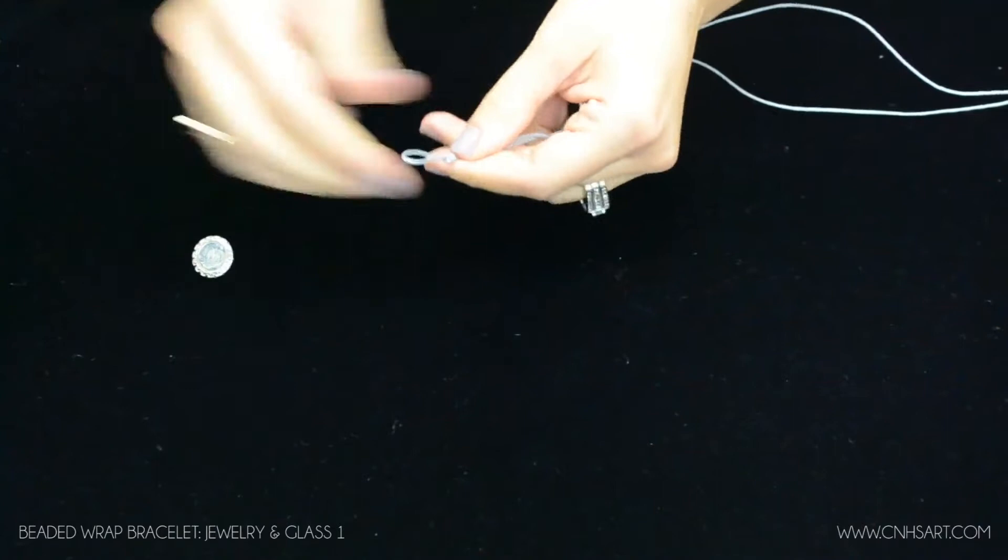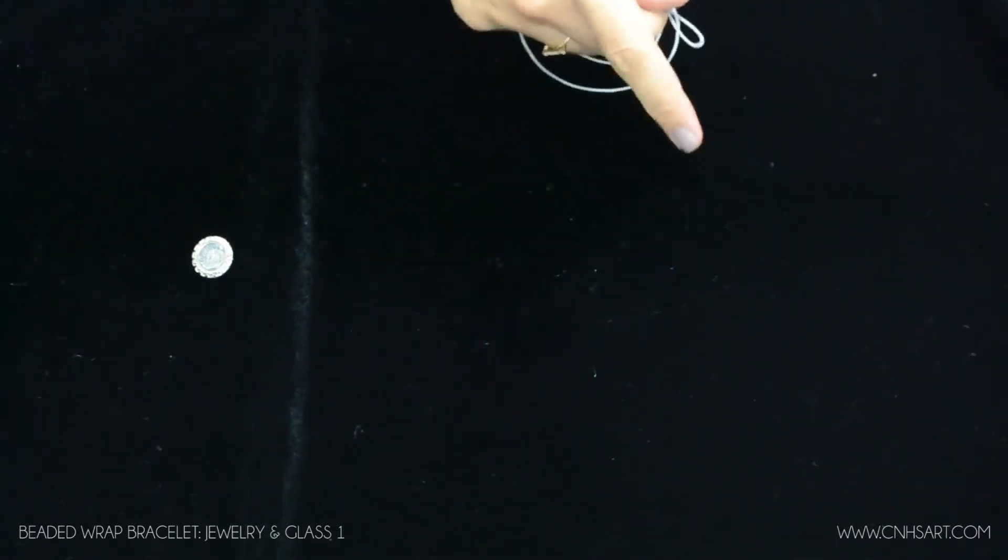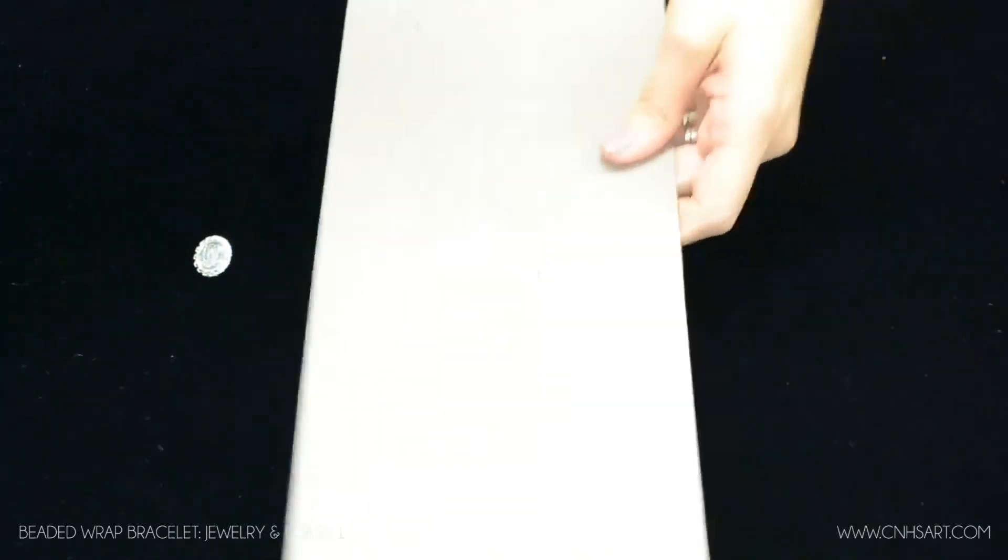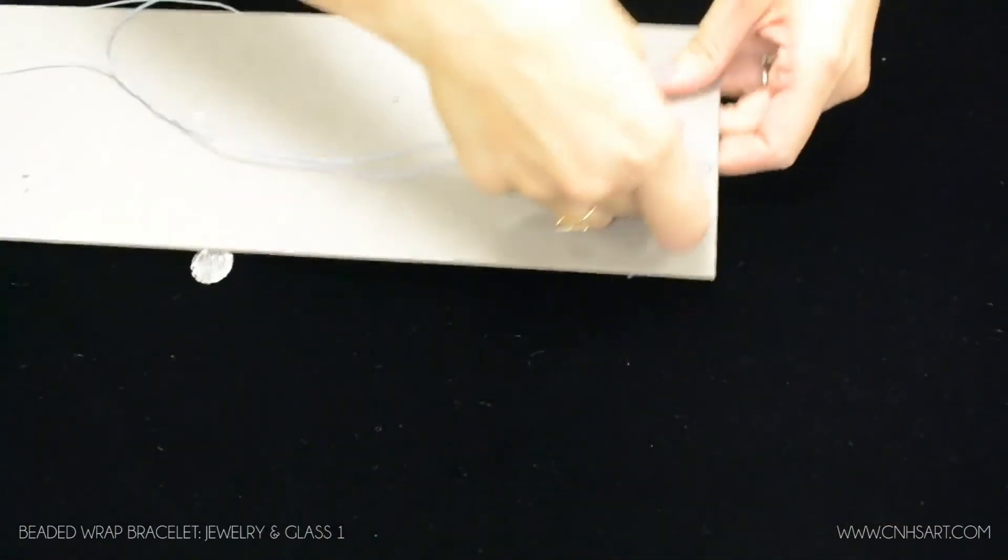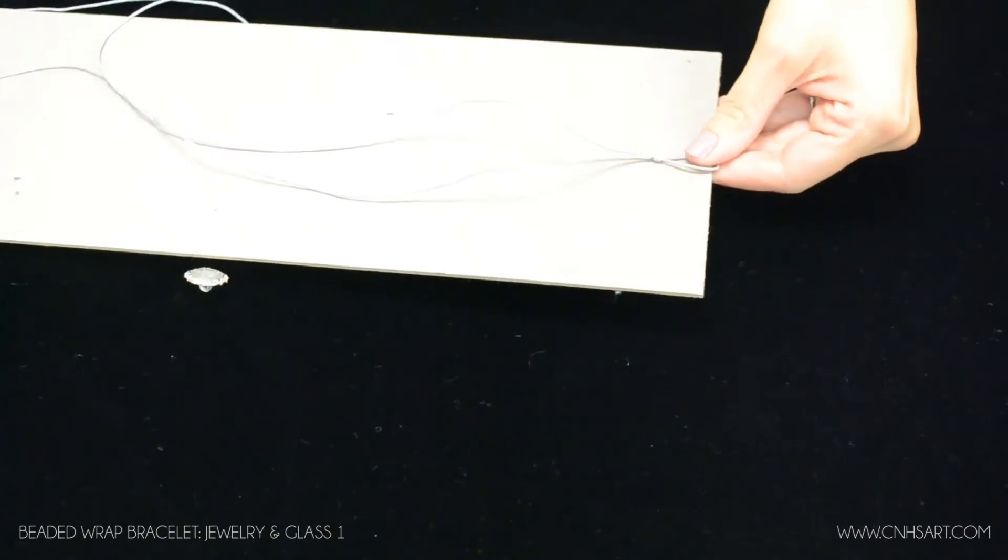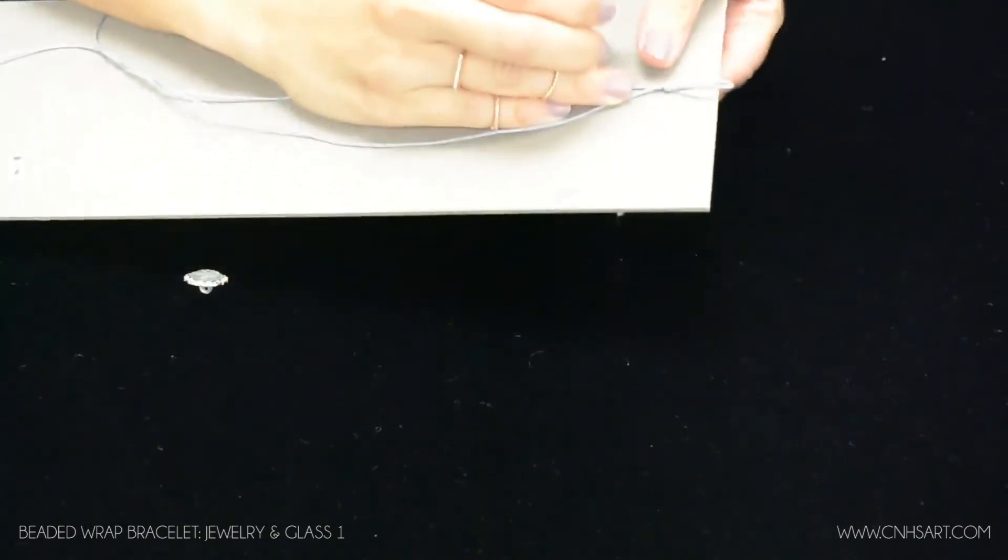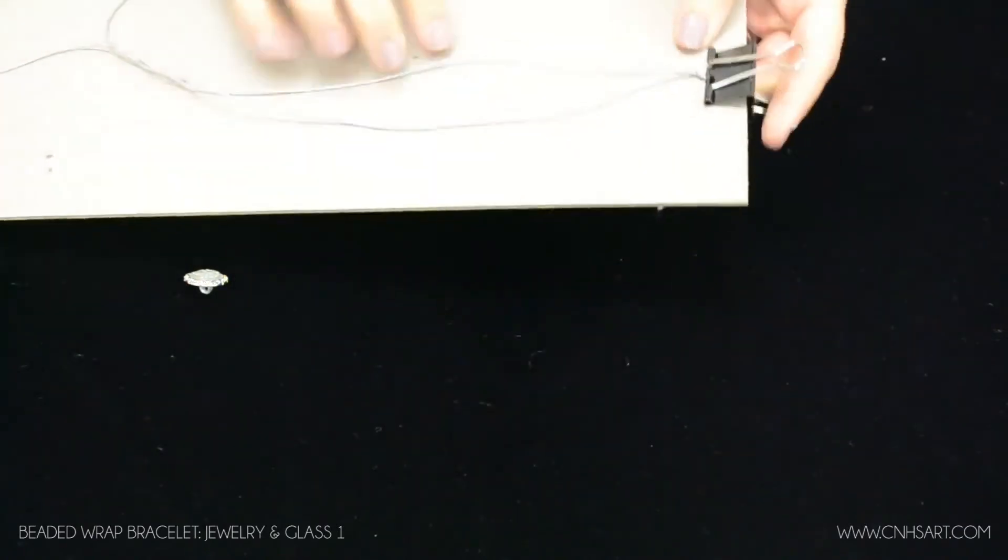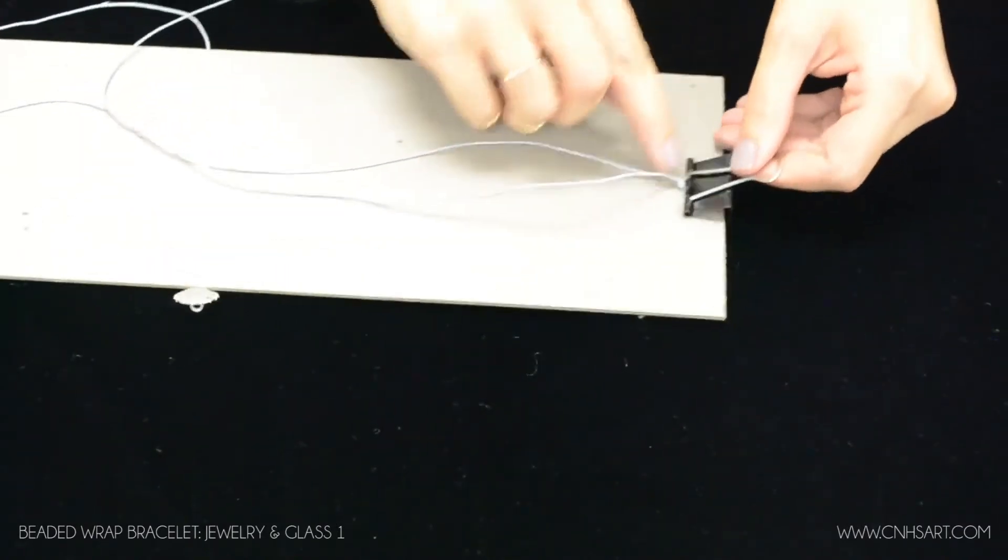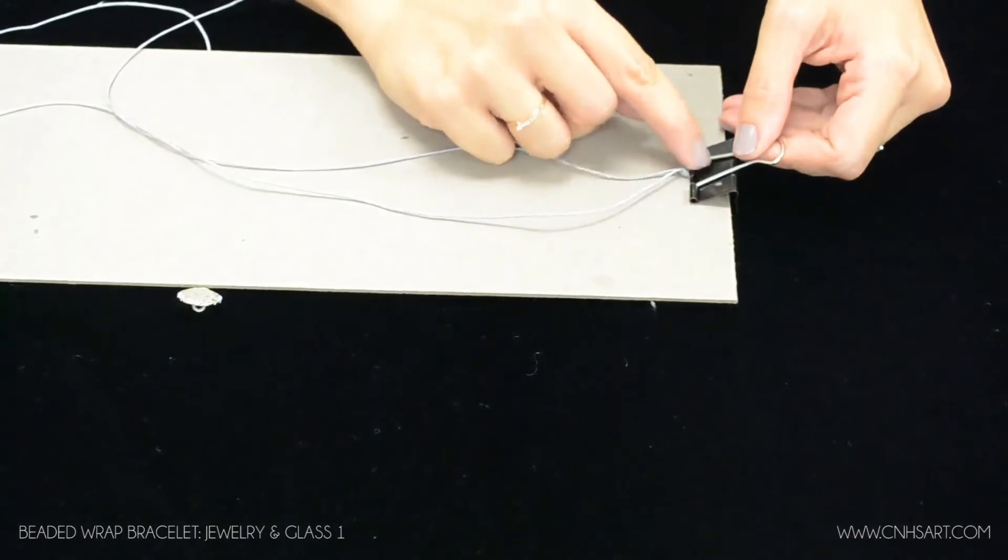And now you're going to use your board to clip on the cord and you want to clip it so that the knot comes just below the black clip here.